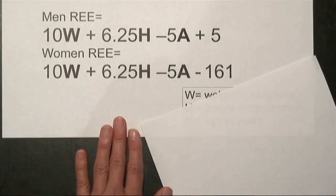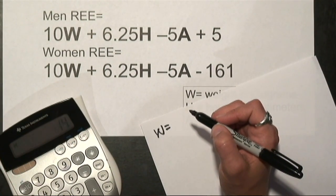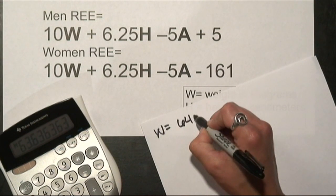For instance, my weight is about 140 pounds. So I know 140 divided by 2.2 will give me about 64 kilograms.